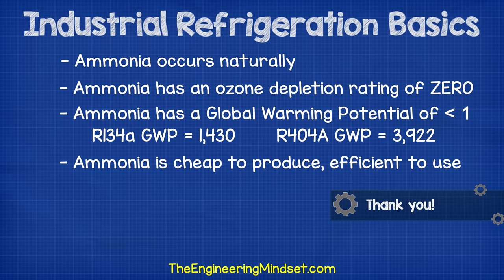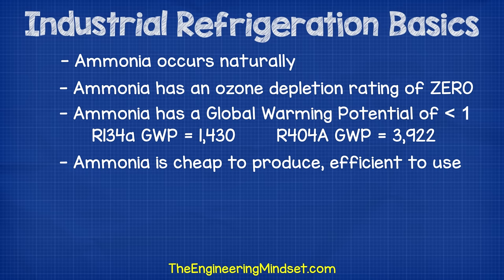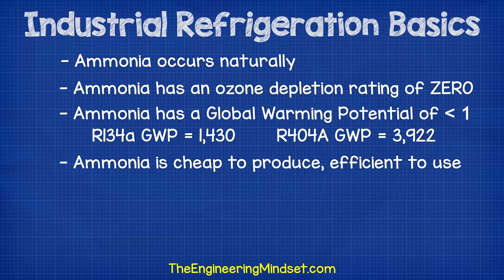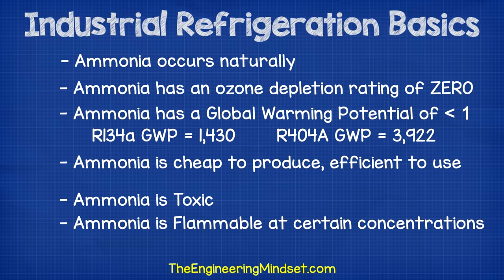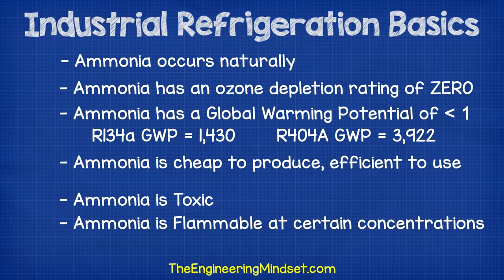Ammonia is also cheap to produce and energy efficient to use. It has the capability to absorb large amounts of heat as it evaporates, which is a really important aspect for a refrigerant. It also means that pipes and components can be made thinner and smaller. Ammonia is toxic, however, and can also be flammable at certain concentrations. It gives off a very sour smell, so it's easily noticed if a leak occurs. If ammonia leaks, it will react with the carbon and water in the air to form ammonia bicarbonate, which is a harmless wash compound.